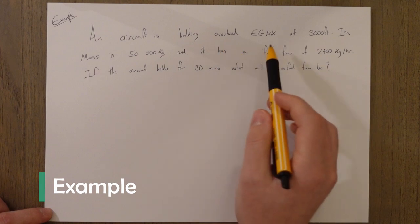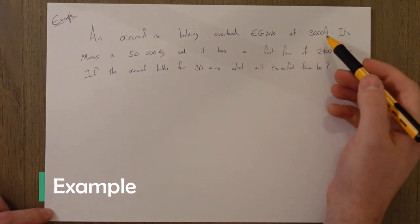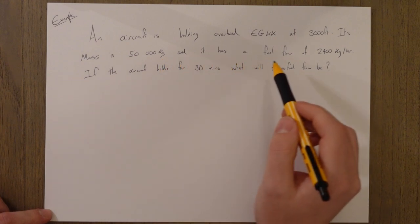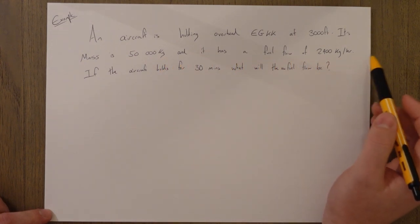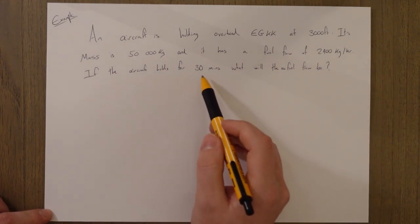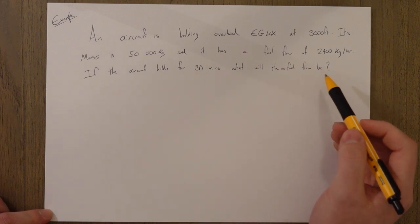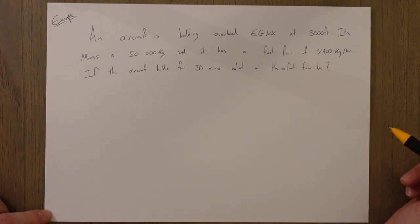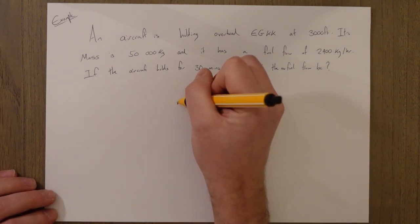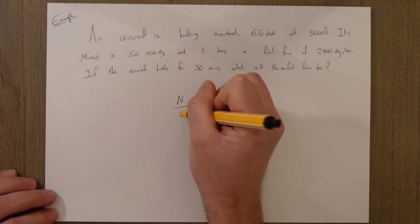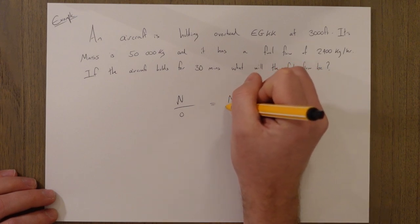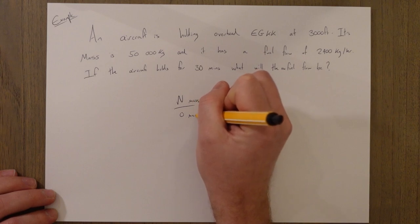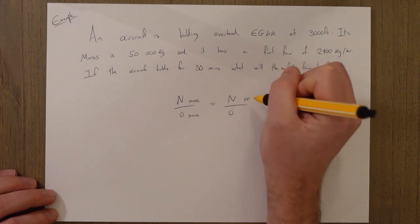An aircraft is holding overhead Gatwick at a flight height of 3,000 feet. Its mass is 50,000 kg and it has a fuel flow of 2,400 kilograms per hour. If the aircraft holds for 30 minutes what will the new fuel flow be? So we'll write down our equation: new over old equals new over old. This will be mass over here and fuel flow over here.